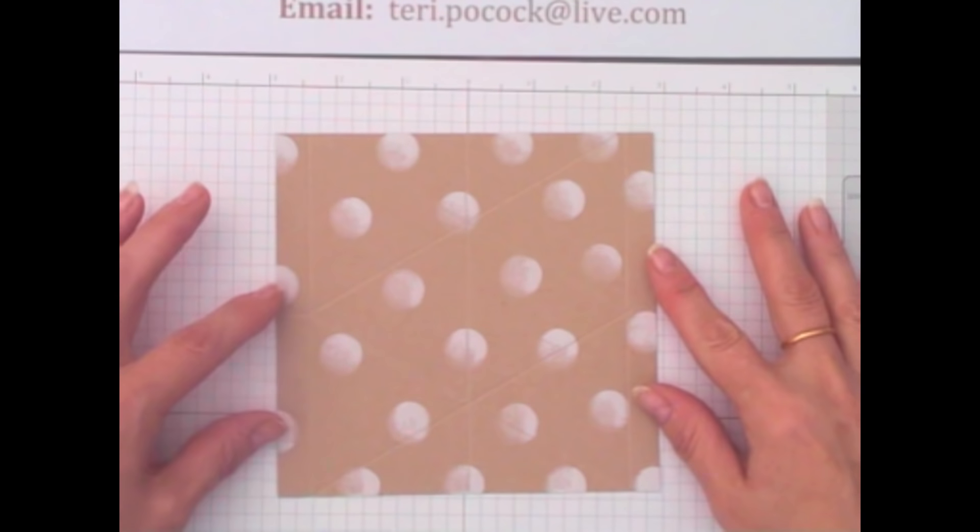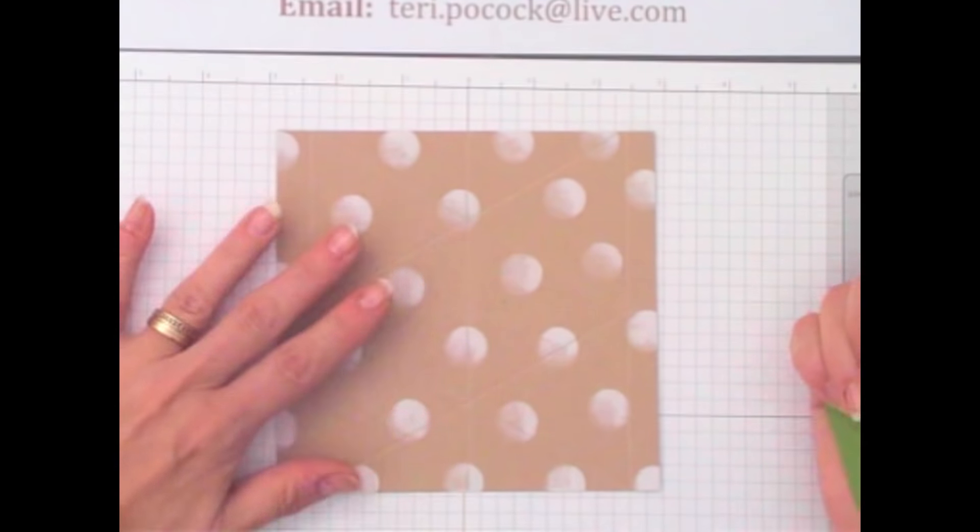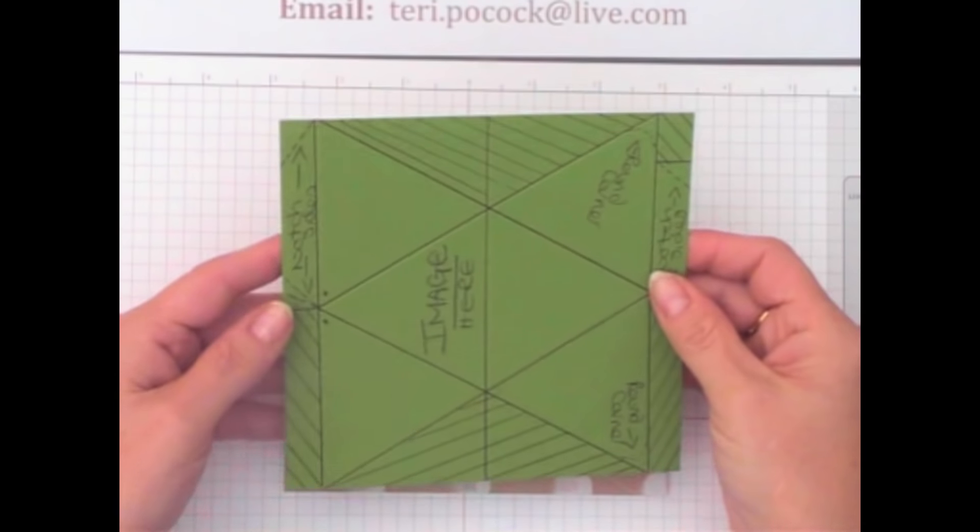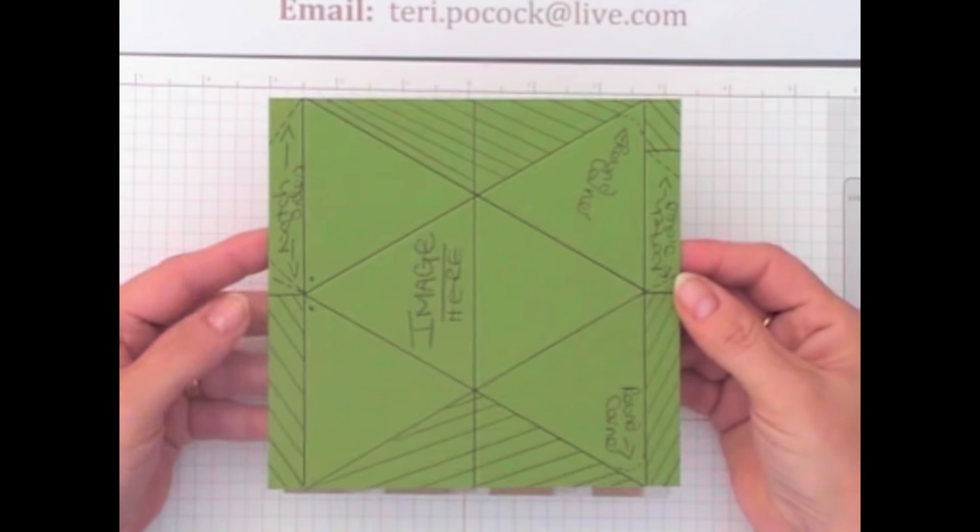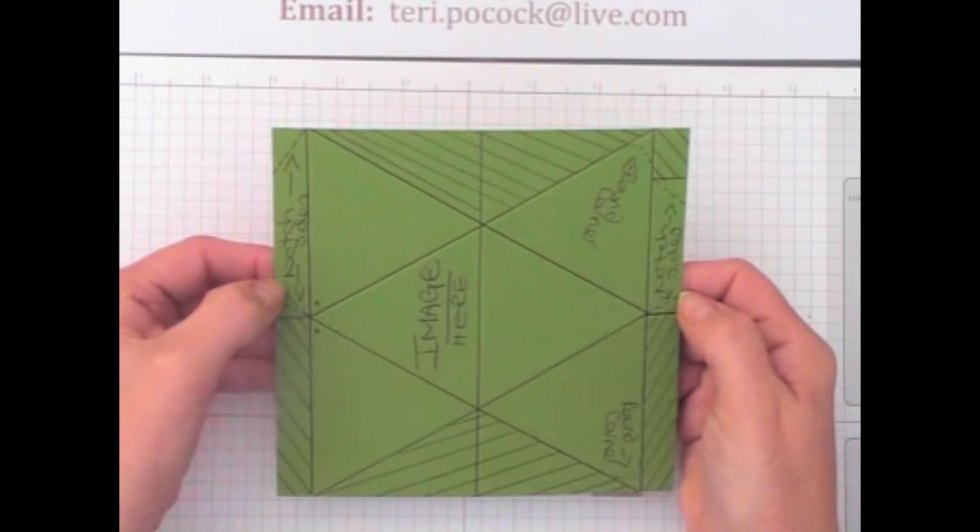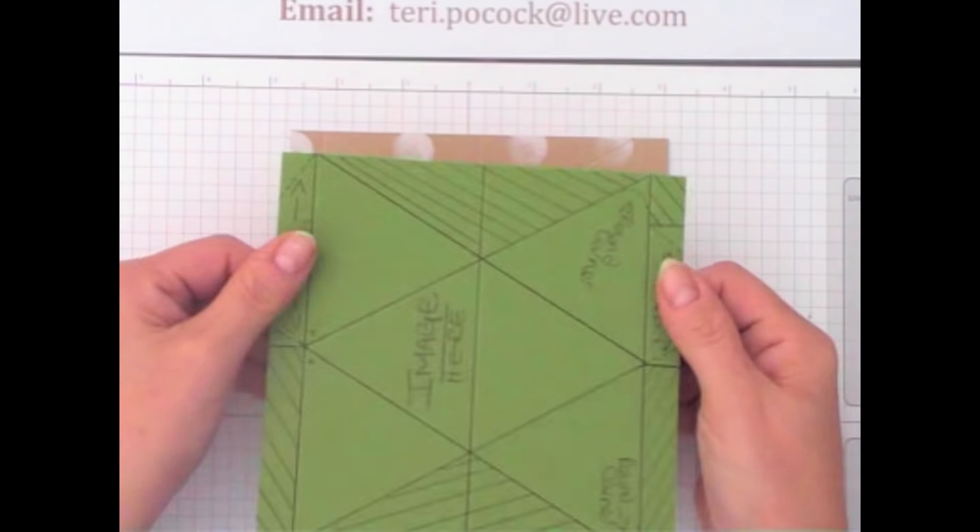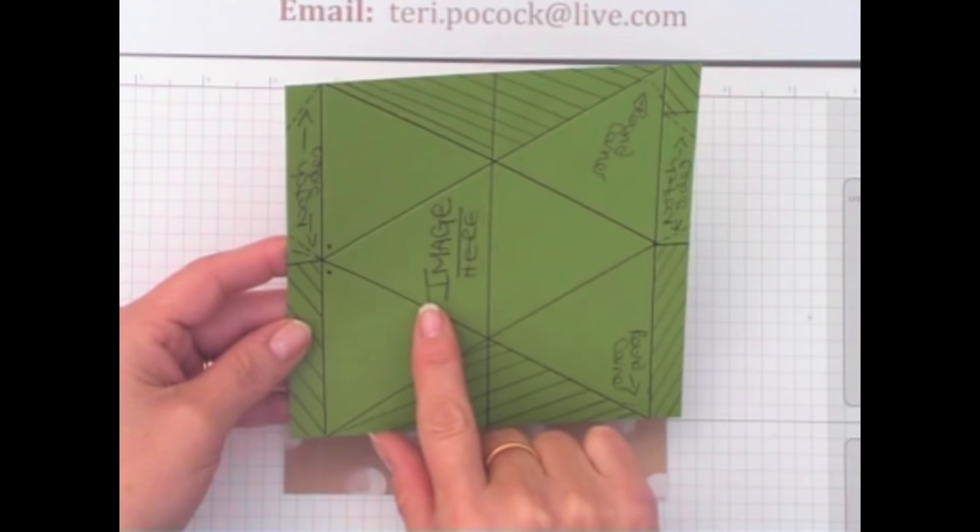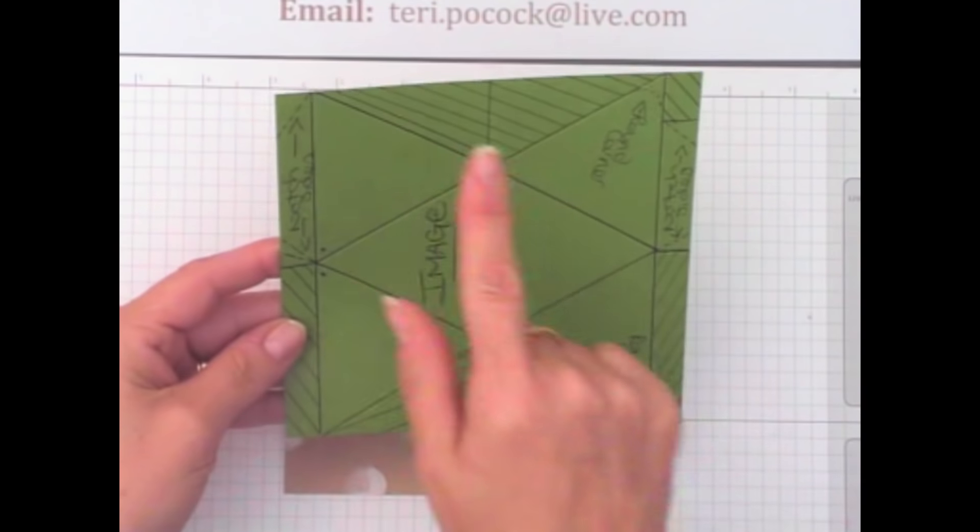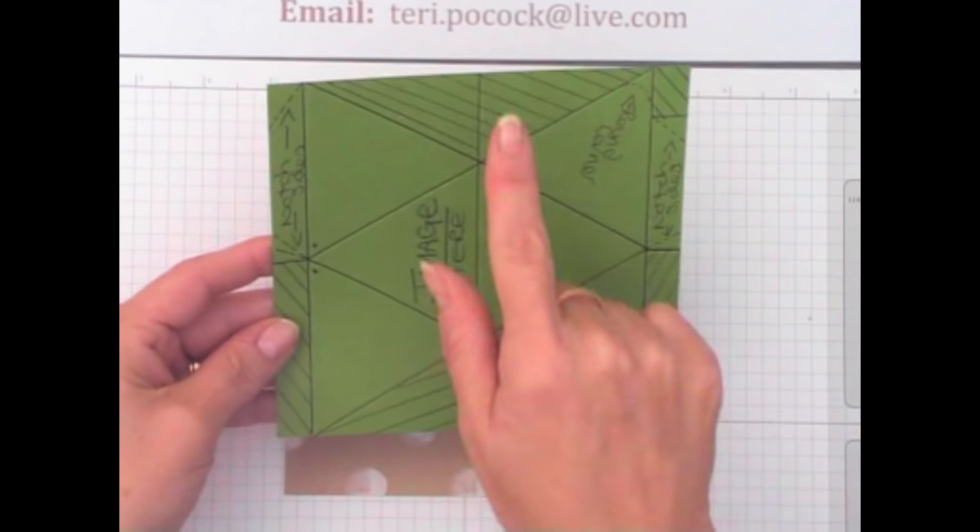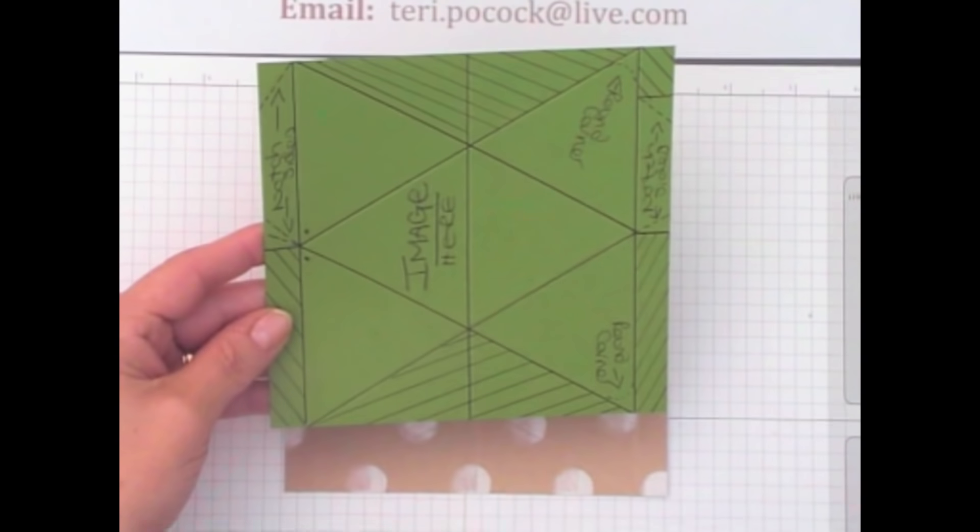The next thing we want to do is some cutting. Now because you can't see the score lines very well on this cardstock with the camera, I've drawn up a template. If you hold your cardstock so you've got the two half inch sections on the side, you should be able to see a diamond shape in the middle and a large triangular shape on the top and bottom of your cardstock. And it's these two we want to remove first of all.